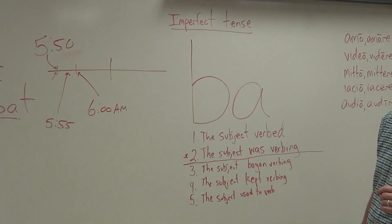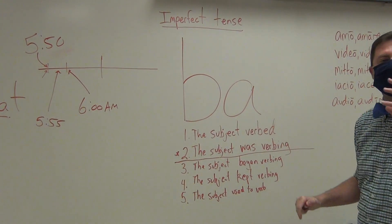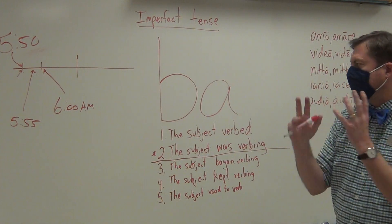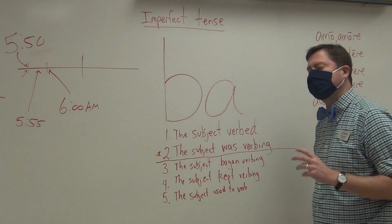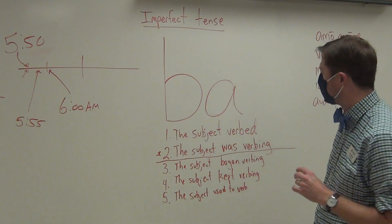So, imperfect tense, to summarize. You will recognize because you will see the BA. And you will know that it is expressing an action of the past in which the action as you describe it is a non-completed action.